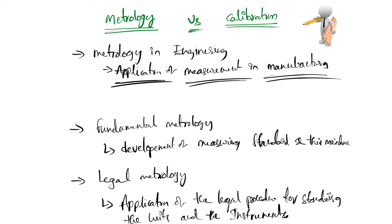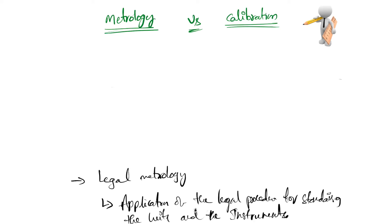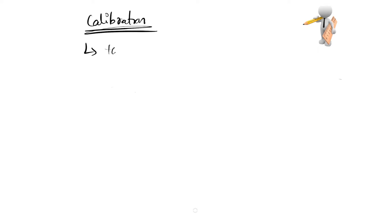Coming to calibration — calibration is nothing but the act of comparison. It ensures that the instrument used for measurement is giving accurate results or not. That's what calibration ensures.